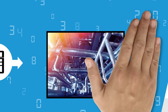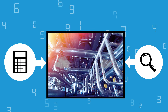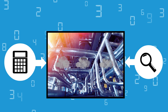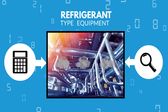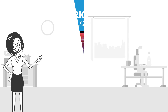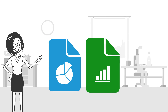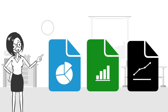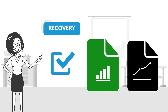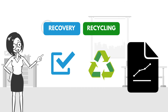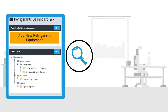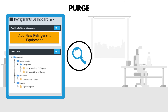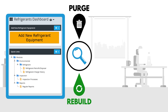ERA calculates and tracks the GHG emissions produced by the specific refrigerant type and refrigerant equipment. Nancy can access detailed reports about her company's emissions accounting for refrigerant recovery, recycling, and disposal.